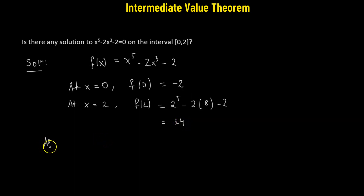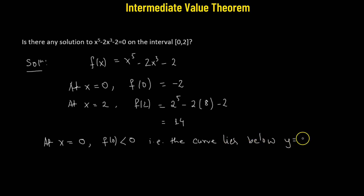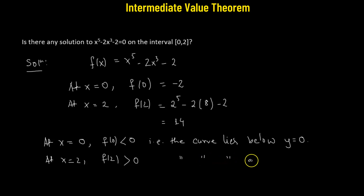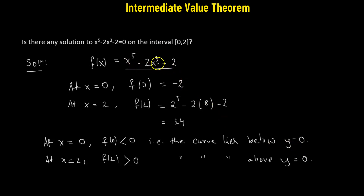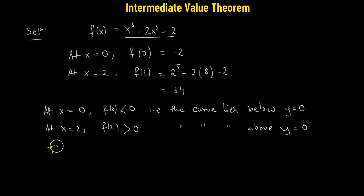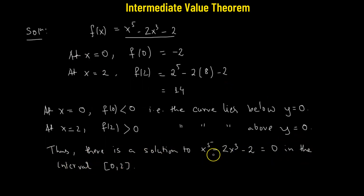So this means at x equals to 0, f of 0 is negative — that is, the curve lies below y equals to 0. And at x equals to 2, we have f of 2 which is 14, a positive number. So that means the curve lies above y equals to 0. So this simply means that according to the intermediate value theorem, the curve given by this polynomial function must cross through y equals to 0. Thus there is a solution to x raised to the power of 5 minus 2x cubed minus 2 equals to 0 on the interval 0 to 2.